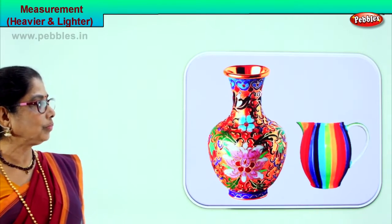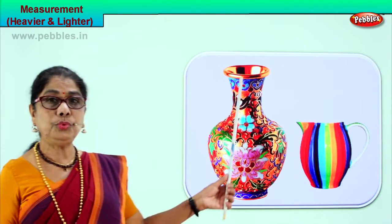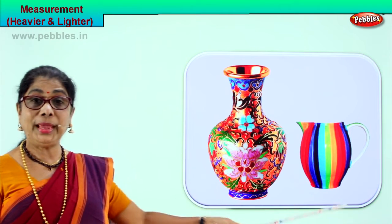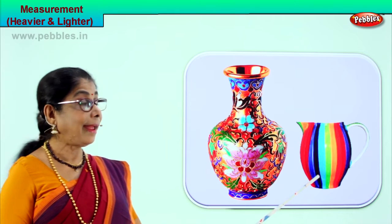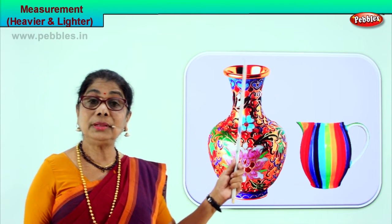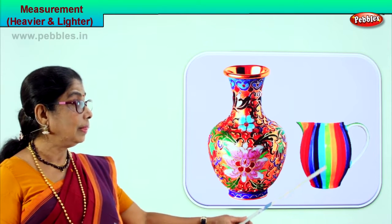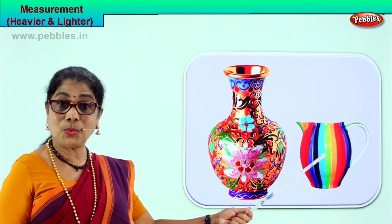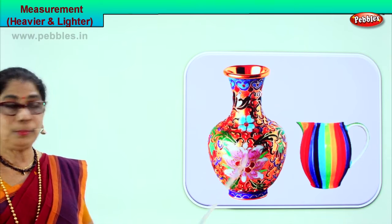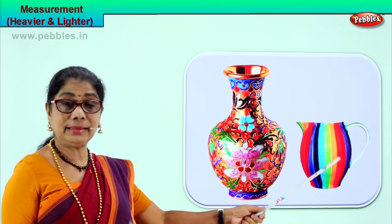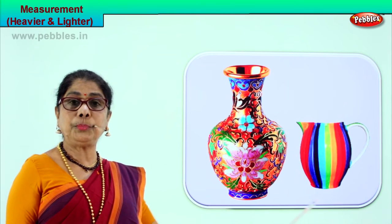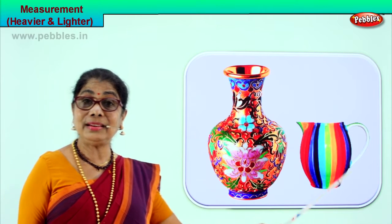I'm sure you understood the two measurements heavier and lighter. Let's go to another picture. Again we have a nice beautiful tall big jar and a tiny little jar — a water jug. When you weigh these two, the tall jar is heavier than the small water jug. The water jug is lighter than the tall beautiful vase.